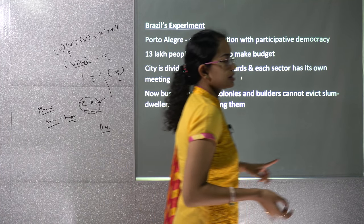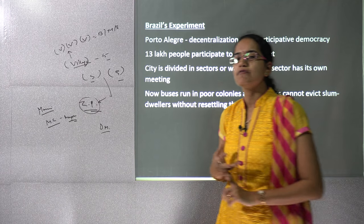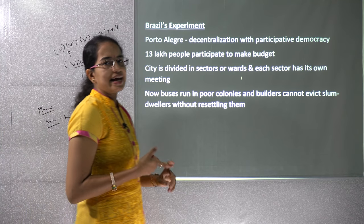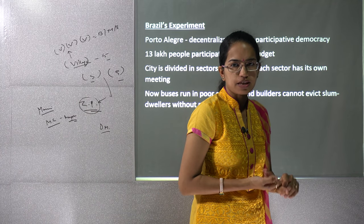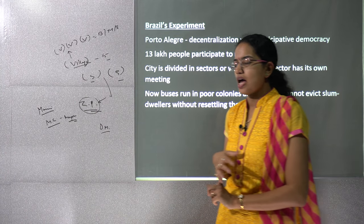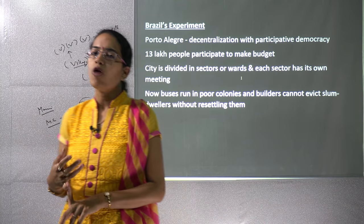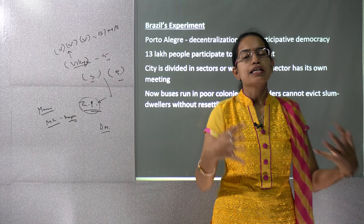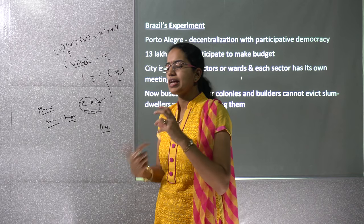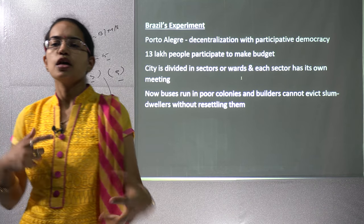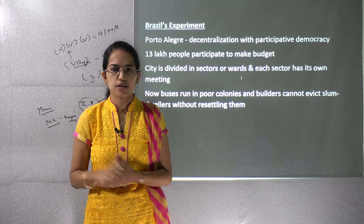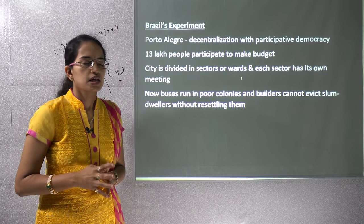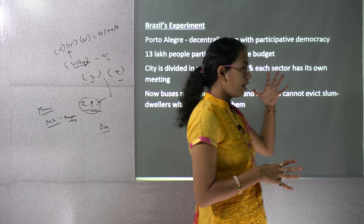Important questions from this chapter include: What is the difference between coming together federation and holding together federation? Why is India a holding together federation? What are the characteristic features of a federal government? What is the difference between a federal and unitary government with examples? What are residuary powers and who looks after them in India? What is the concurrent list?